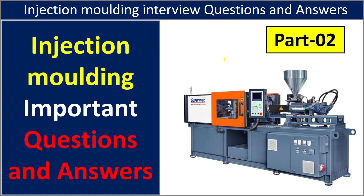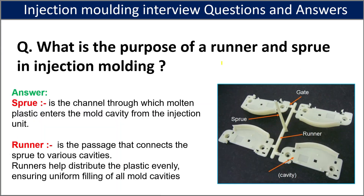The first question is: what is the purpose of the runner and the sprue in injection molding? The sprue is the channel through which molten plastic enters the mold cavity from the injection unit. From the sprue, we are pouring the material, and through the runner it goes into all the cavities.